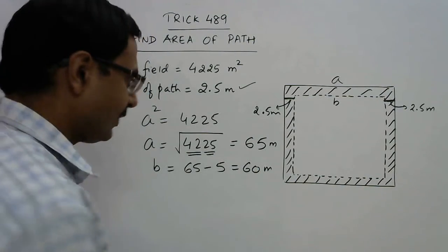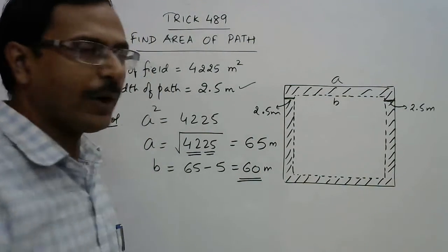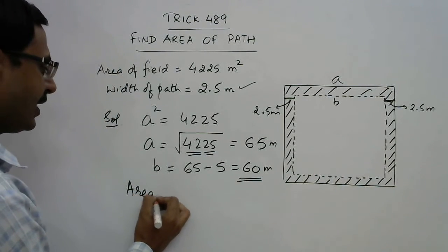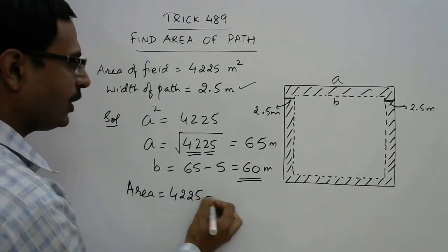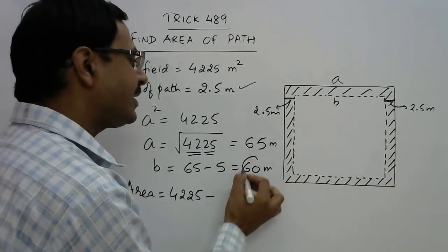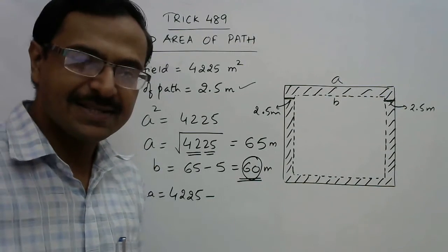And there we are. This is what was required. Now the area of path is outer area which is already given - you don't need to square this again - 4225, and what is the inner area? Inner side is 60, so 60 into 60 is 3600.